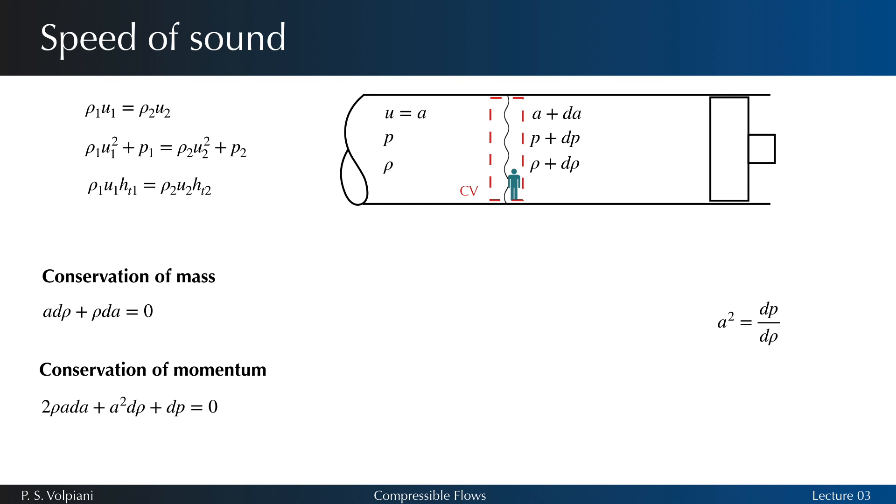However, the derivative dp d rho is not unique; it depends entirely on the process. Thus, it should be written as a partial derivative with the appropriate subscript. Since we are analyzing an infinitesimal disturbance with no heat transfer and friction effects, the process is both reversible and adiabatic, which means that it is isentropic.